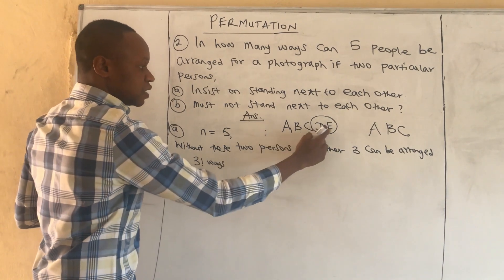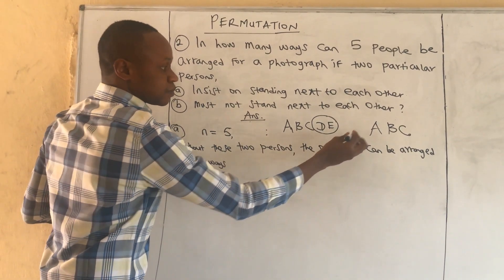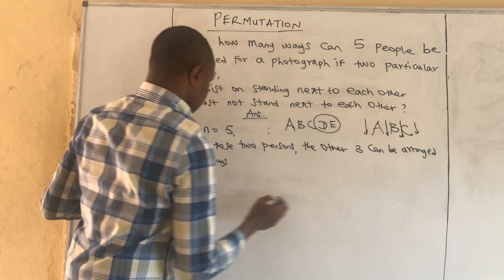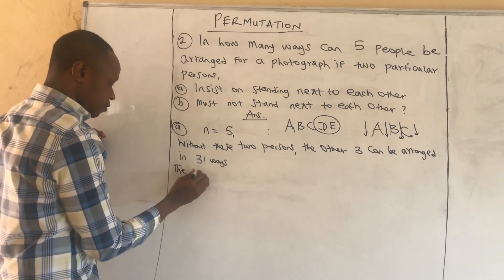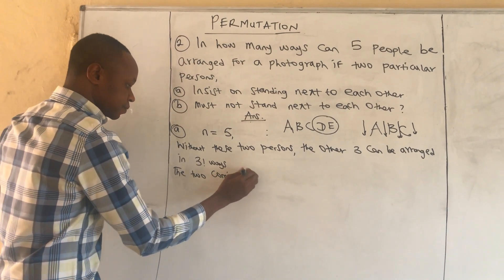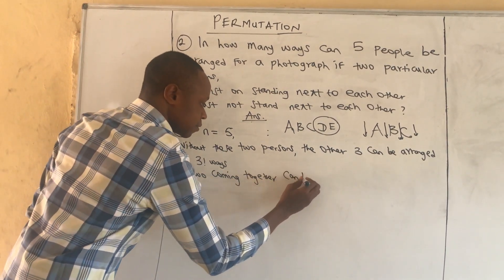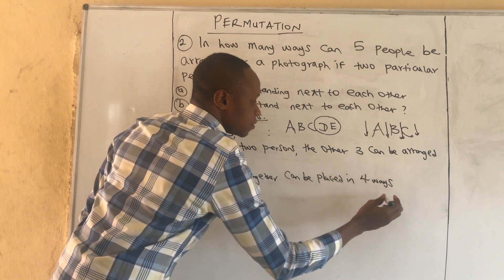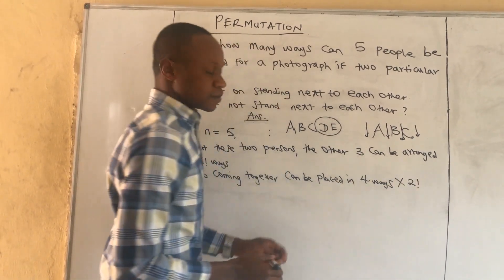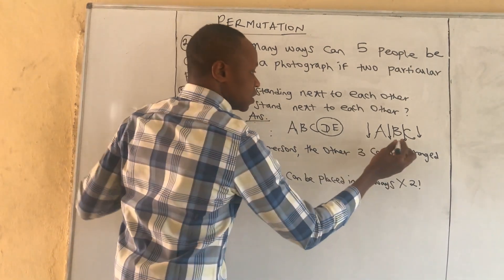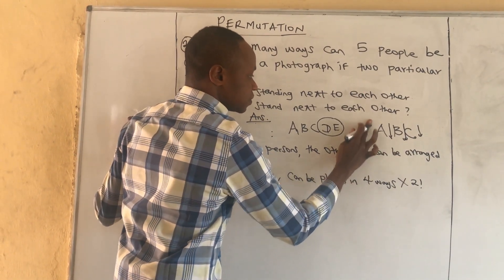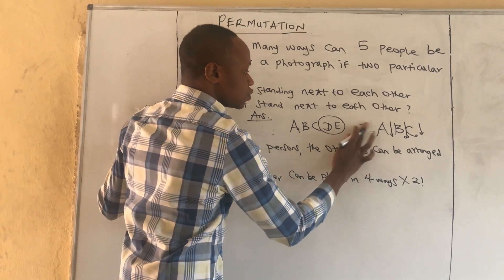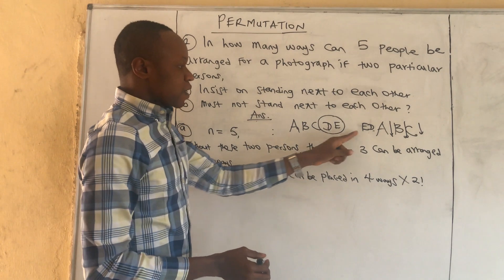If D and E must stand together, they can occupy any of the four gaps between or beside A, B, C — here, here, here, or here. So they have four positions. Also, for every position, they can be arranged as DE or ED, giving two factorial ways.